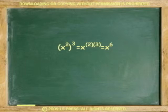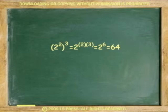Or if we make x equals 2, then 2 squared cubed is 2 to the 2 times 3 or 2 to the 6, which is 64.